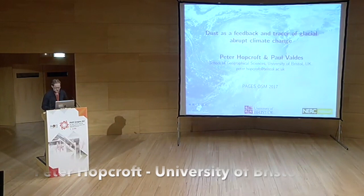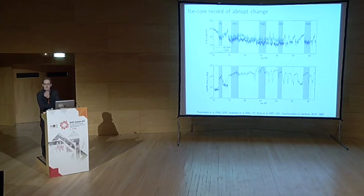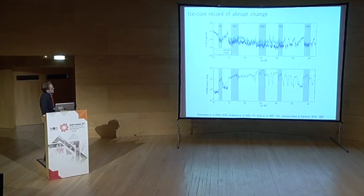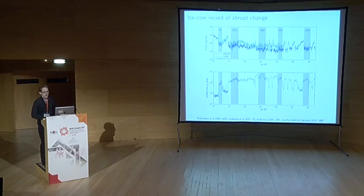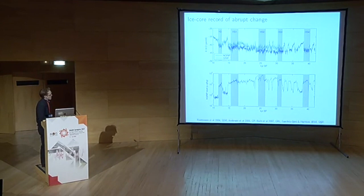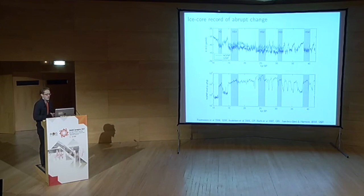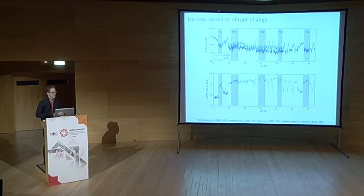The next speaker transitions from the observational to the modeling domain. Starting with the Greenland δ18O record showing the last 50,000 years of Dansgaard-Oeschger abrupt climate change variability, and focusing on dust — there is a lot of co-variability between the abrupt warming in Greenland and abrupt reductions in dust supply. The aim of this work is to understand the linkages between those two records from a modeling perspective.